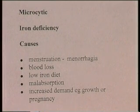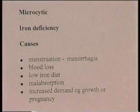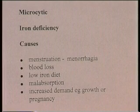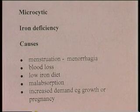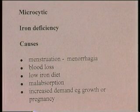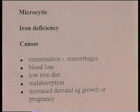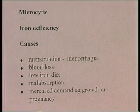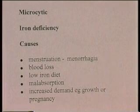Microcytic anemias are normally caused by iron deficiency, and there are many things that can cause iron deficiency. Excessive menstruation is one; in fact, blood loss for whatever cause can lead to iron-deficiency anemia because the body runs out of iron. Clearly, if there's not enough iron in the diet, iron deficiency will occur. But in some people, even if there is enough iron in the diet, it might not be properly absorbed — so malabsorption can also lead to iron deficiency.